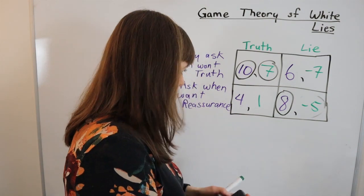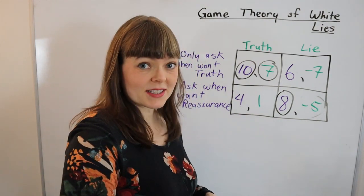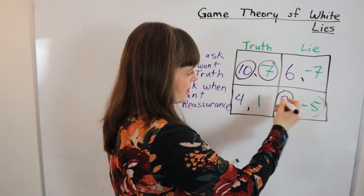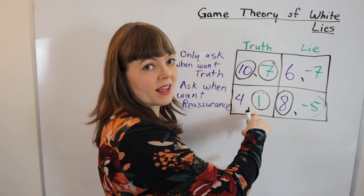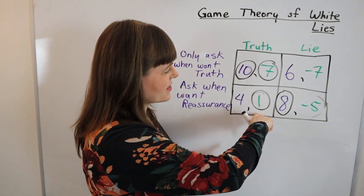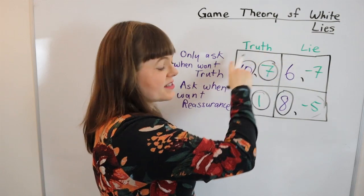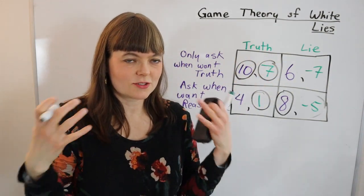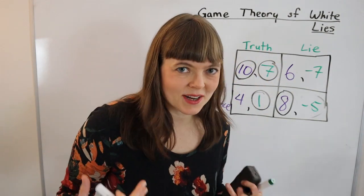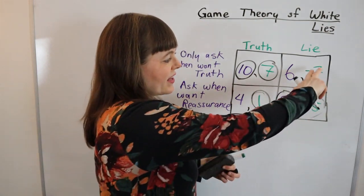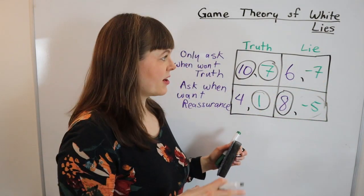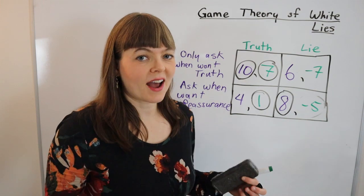In which case that could actually change the equilibrium because we see now that if she asks for reassurance, his best response is no longer to lie, it's actually to tell the truth even if this is going to lead to a fight. And in which case you get a different equilibrium. So changing the payoffs - the psychologically experienced payoffs in people's head - that's going to change the actual payoffs up here which will rejigger the Nash equilibrium.